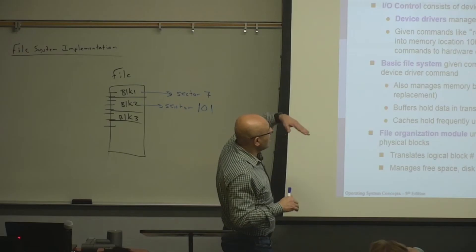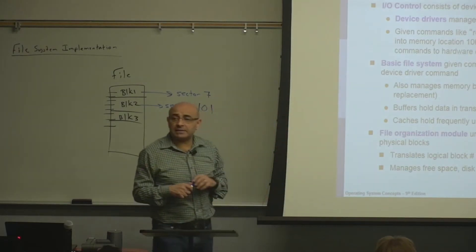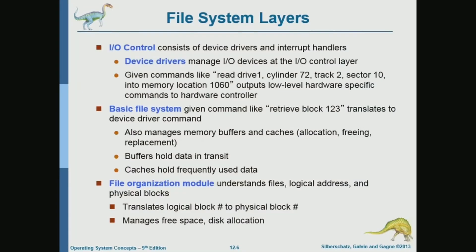On top of that is the basic file system layer, which receives requests for physical blocks — like block number 123. That block number gets translated into a drive number, cylinder number, track number, and sector number, and this command is sent to the I/O control layer. This layer also handles buffering — the buffers that transfer data between disk and memory.